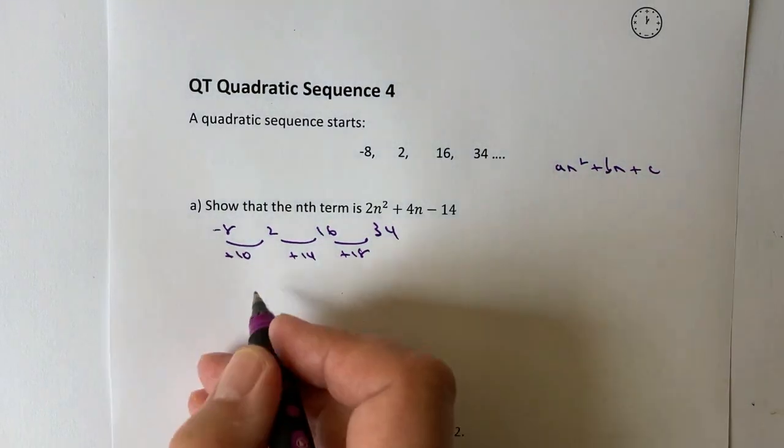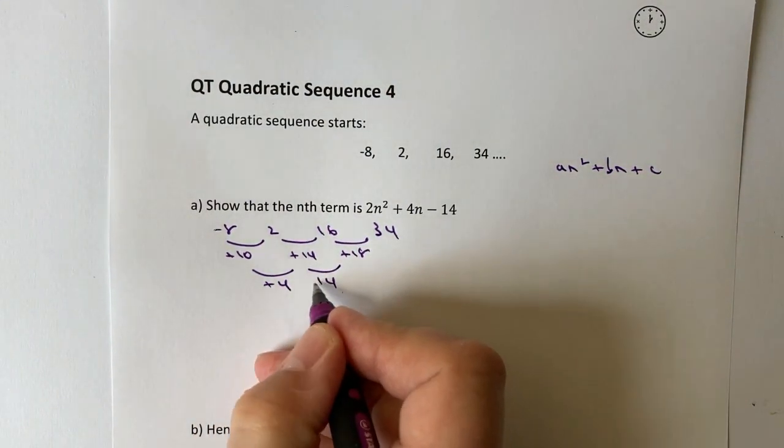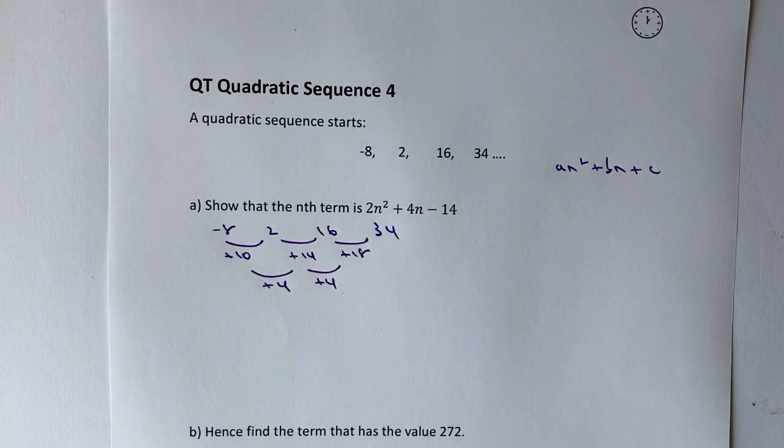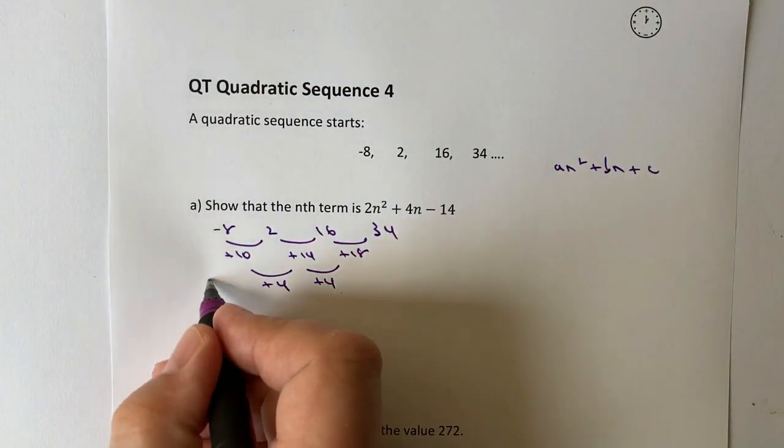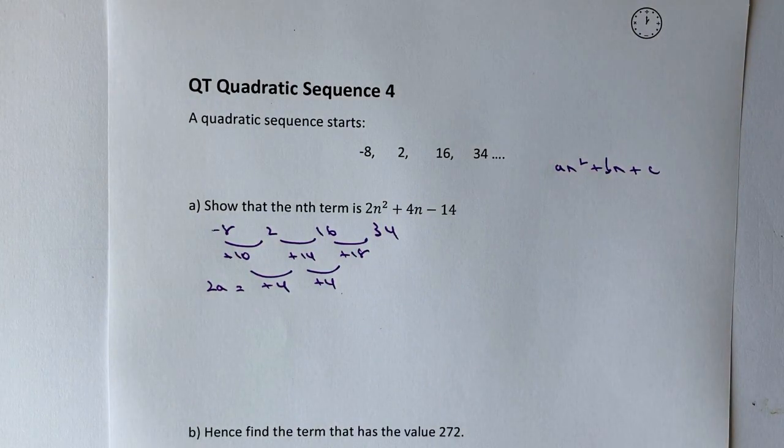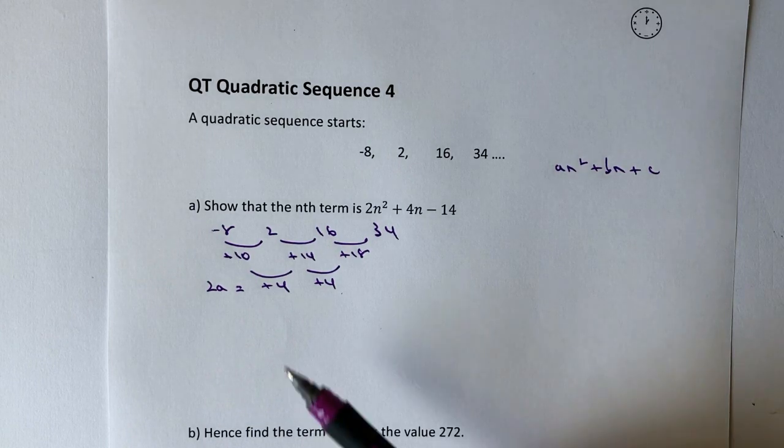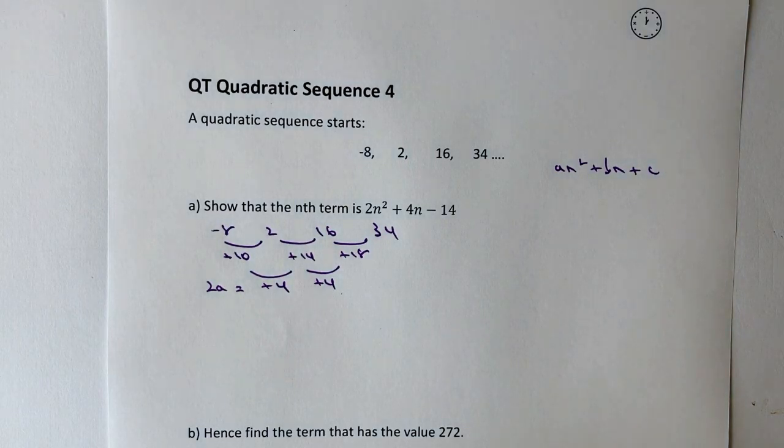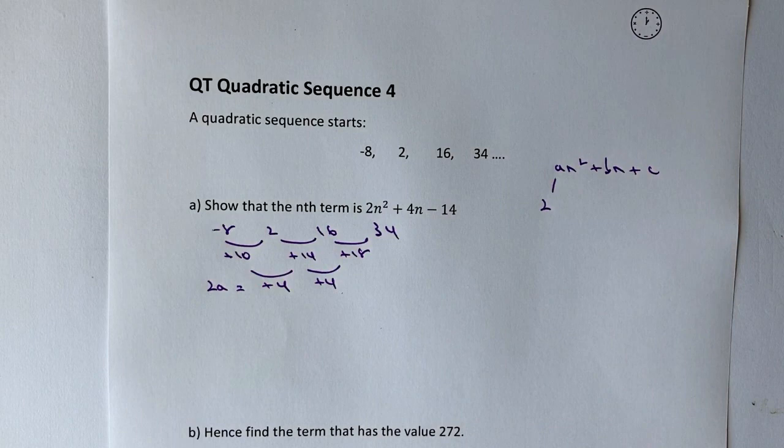So the second difference is going to be plus 4. That's going to work for me because there's information I can take from this. The first thing is that plus 4 is the equivalent to 2a. So we can say 2a is plus 4, and you just need to remember these formulas. So the first one is 2a is the second difference. Well, in that case, if 2a is 4, then a must be 2.